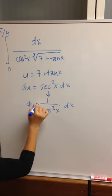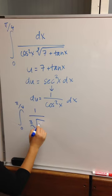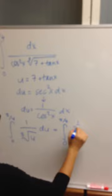So the new problem will be the integral from 0 to pi over 4 of 1 over the cube root of u du, which equals the integral of u to the negative 1 over 3 du.